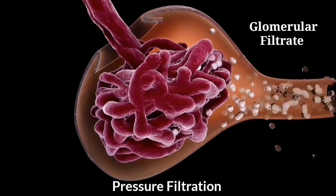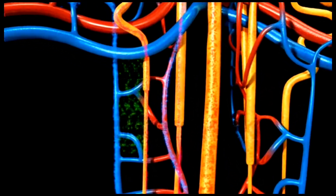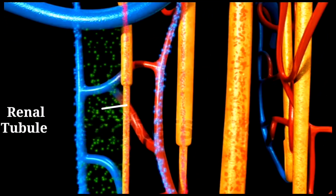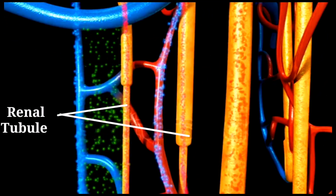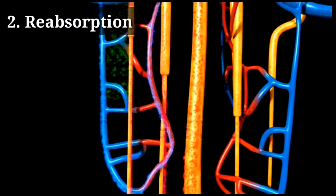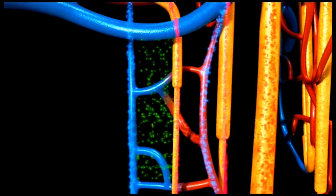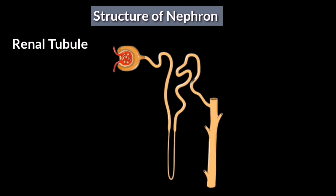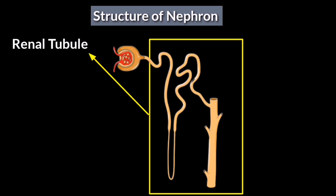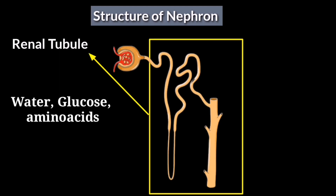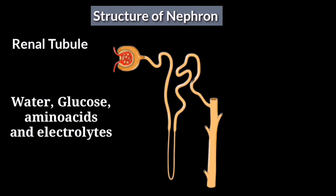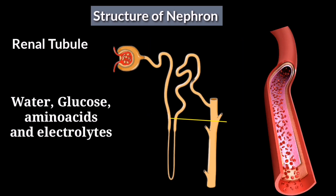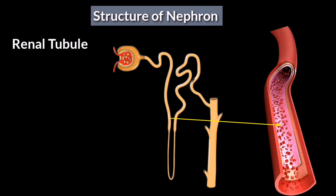Next, the glomerular filtrate moves into the renal tubule, where an important process called reabsorption takes place. During reabsorption, the renal tubule selectively reabsorbs vital substances like water, glucose, amino acids, and electrolytes back into the bloodstream.